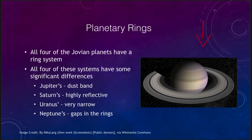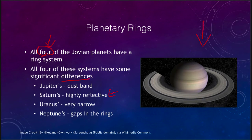Saturn is not the only planet with a ring system. In fact, all four of the Jovian planets have a ring system around them. However, there are differences between each of these. Saturn's is highly reflective and prominent, very easy to see, and Saturn's were the first rings to be detected.